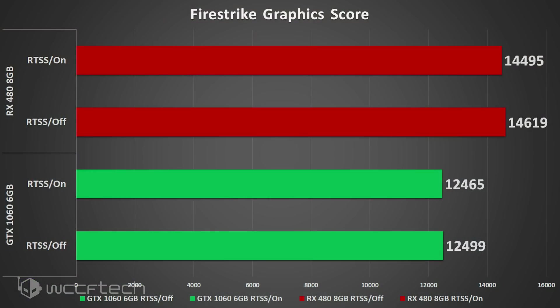First up we're looking at Firestrike, just because it's a synthetic benchmark that's quick and easy and can measure graphics differences easily. Looking at the graphics score specifically, we see almost a 200-point difference on the 480, whereas the 1060 sees about a 50-point difference. The 50-point difference is within margin of error, but a nearly 200-point difference is measurable — something is impacting the performance there.